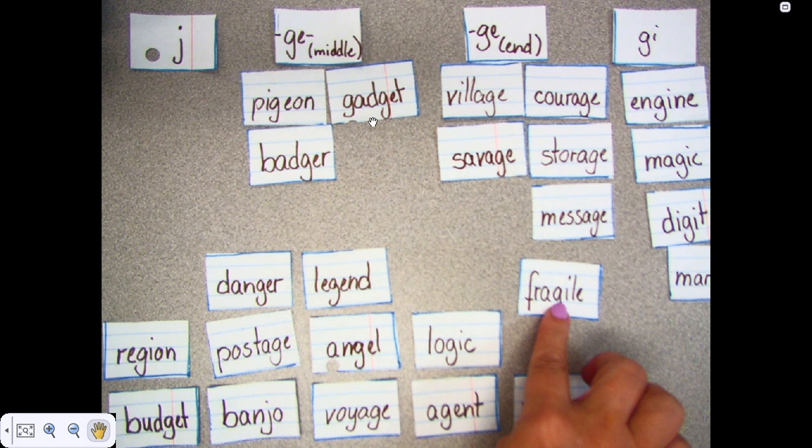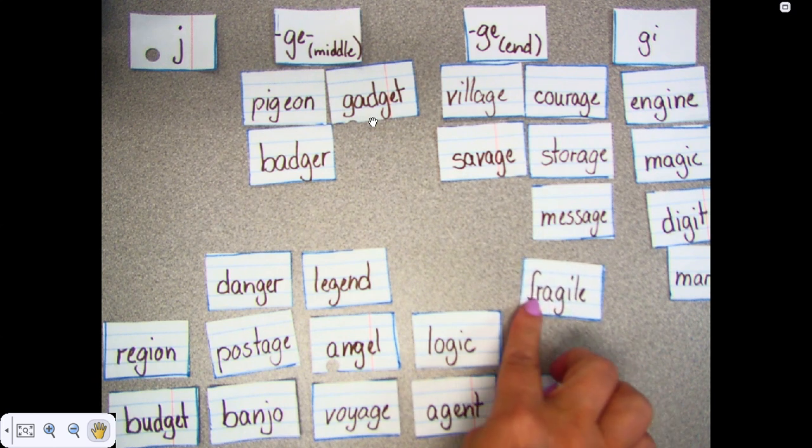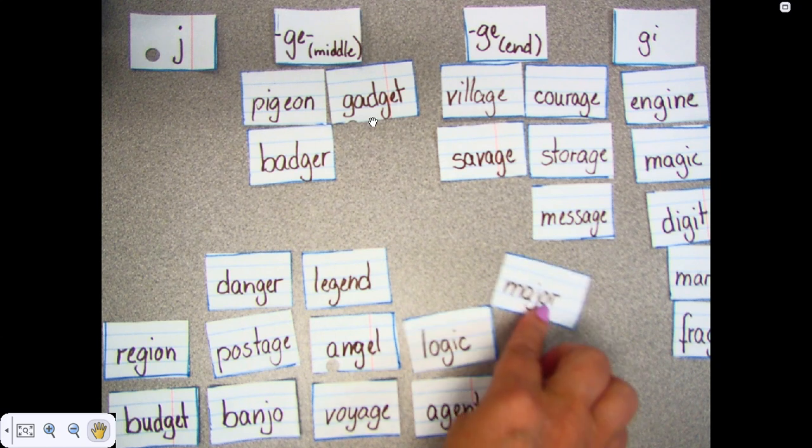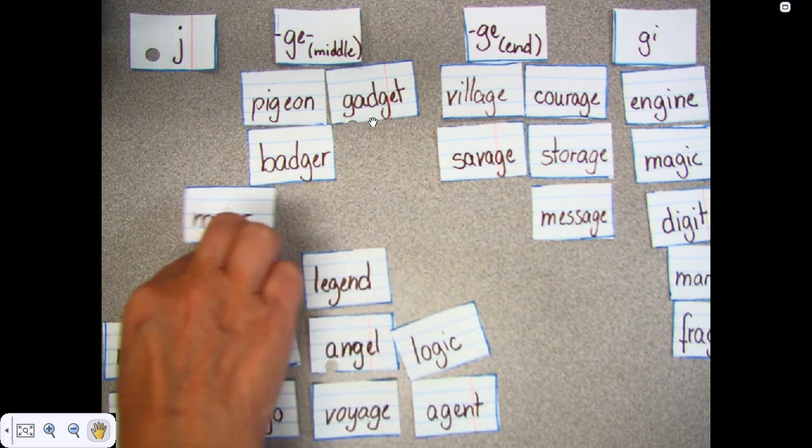Fragile. It has the G right here. G-I. It goes over here. Major. Oh, it has a J, so it goes way over here.